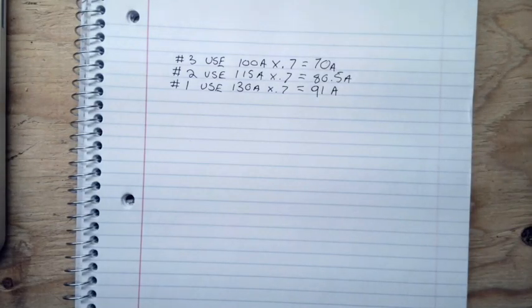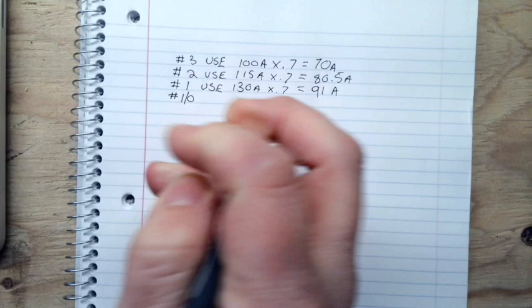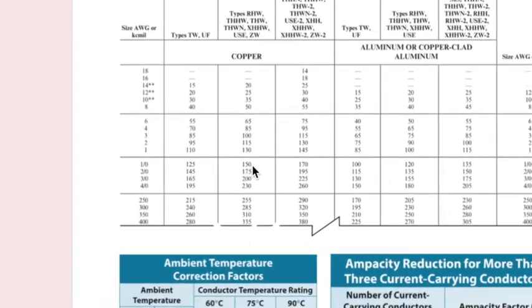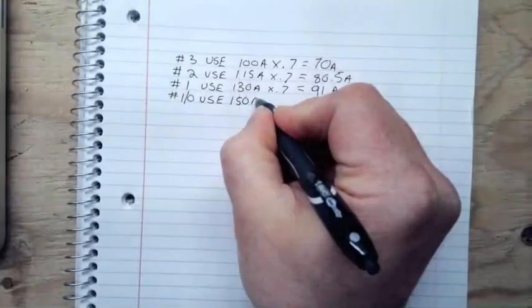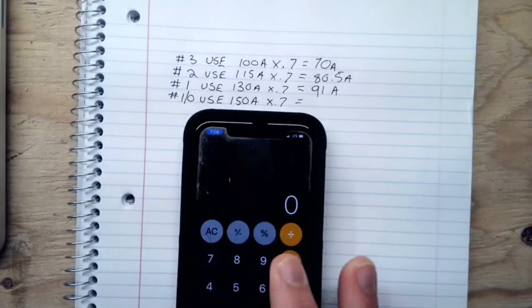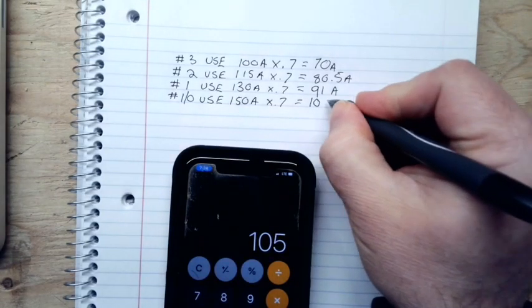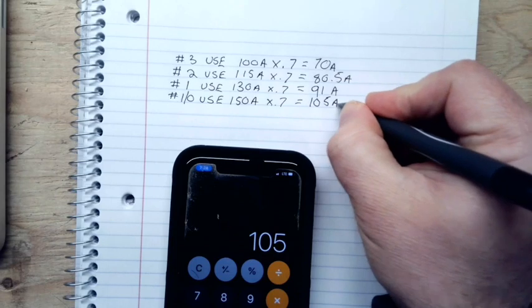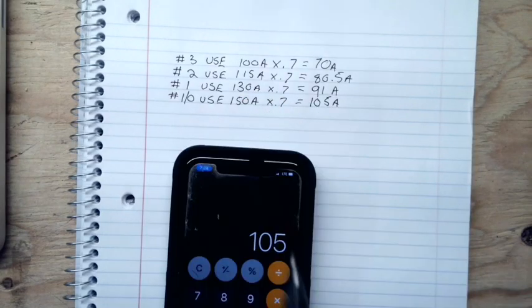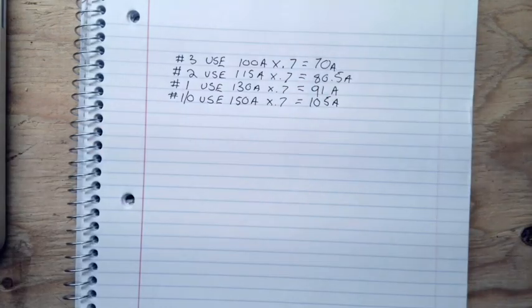So now we're going to go to the number one-ought U.S.E. And one-ought U.S.E. is good to 150 amps times 0.7 is equal to 105. As I sit here doing this, I want you guys to see that this really isn't that hard, right? It's more procedural. We are good at 105 if we use one-ought to 100 amps, but that only takes care of the fact that we have seven current carrying conductors in the conduit.